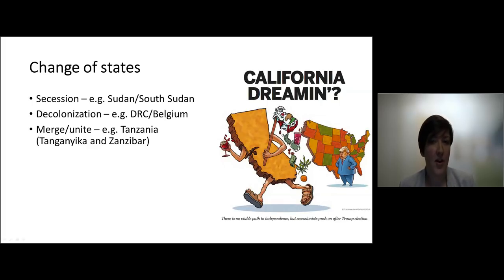States can also merge or unite. And that happened, for example, in the case of Tanzania. Or states can dissolve. And that happened in the famous example of the Soviet Union, which fell apart into quite a number of new states.